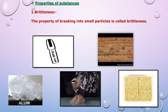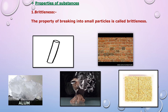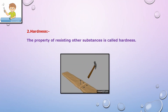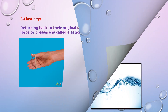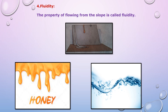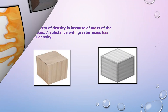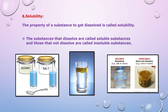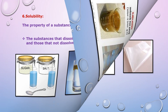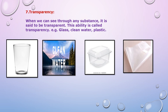We studied properties of substances: the first property is brittleness, the second is hardness, the third is elasticity, the fourth is fluidity, the fifth is density, and the sixth is solubility — its definition and examples of soluble and insoluble substances. The seventh property we studied is transparency — its definition and examples.